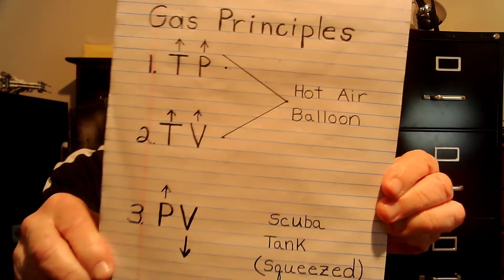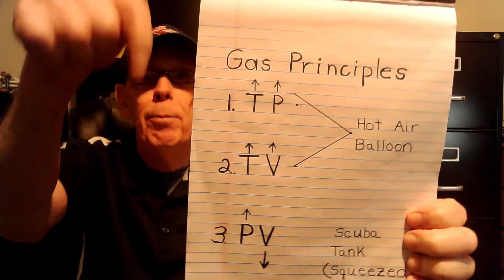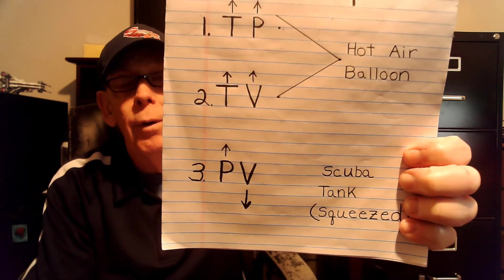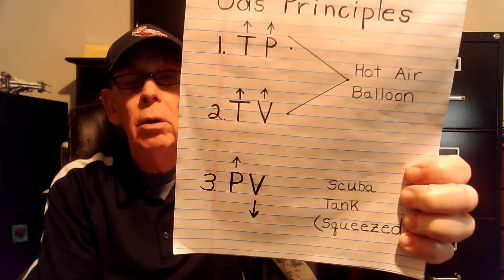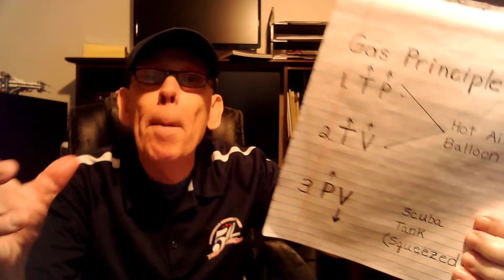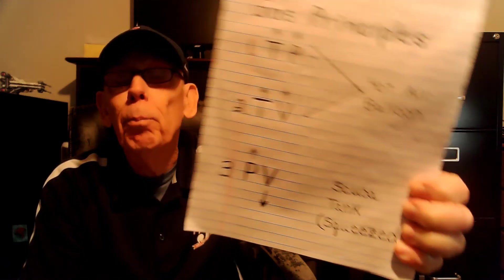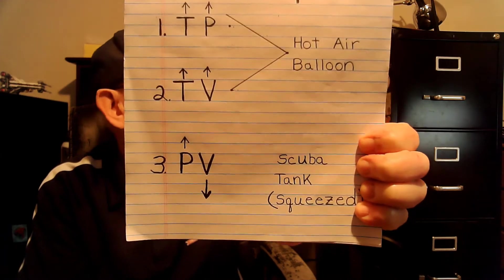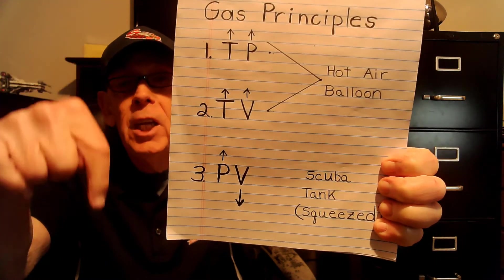The hot air balloon illustrates this perfectly: you heat up the air inside it, it has more pressure — T goes up, P goes up — and it takes up more space, filling up the balloon. That's T up, V up. And then the third principle: if the pressure goes up on a gas, the volume goes down — P up, V down. If you squeeze gas into a container like a scuba tank, it takes up less space — it's compressed. Compressed just means squeezed into a smaller space.